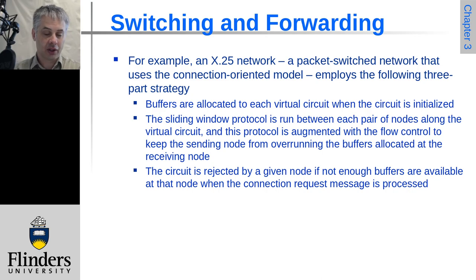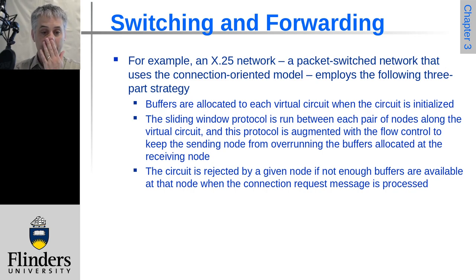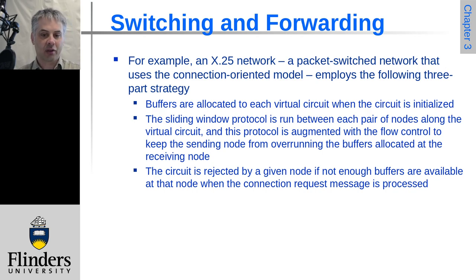Let's have a look at the X.25 network as an example that uses virtual circuits. It's a packet-switched network but it is based on connection-oriented services, so it's based on virtual circuits. When you initialize a virtual circuit it allocates buffers to each virtual circuit to make sure that as the packets come through they can be delivered.